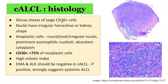Histological findings of cutaneous anaplastic large cell lymphoma include dense sheets of large CD30 positive cells with irregularly shaped horseshoe or kidney-shaped nuclei. Anaplastic cells with round, oval, or irregular nuclei, prominent eosinophilic nucleoli, and abundant cytoplasm are often found. The majority of neoplastic cells should show CD30 positivity in greater than 75% of cells, and there is a high mitotic index. The markers EMA and ALK should be negative; if positive, this strongly suggests systemic anaplastic large cell lymphoma.